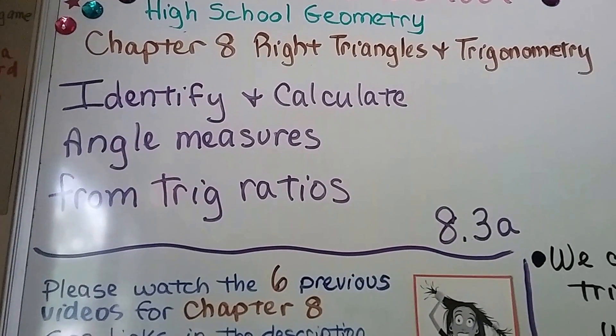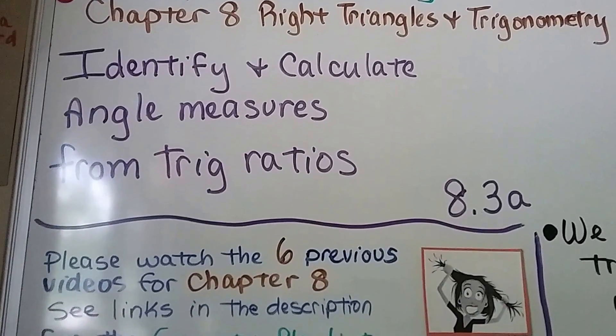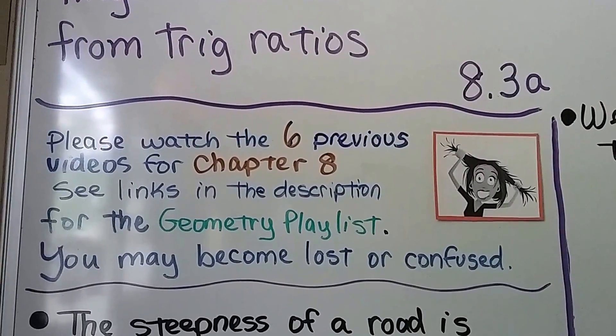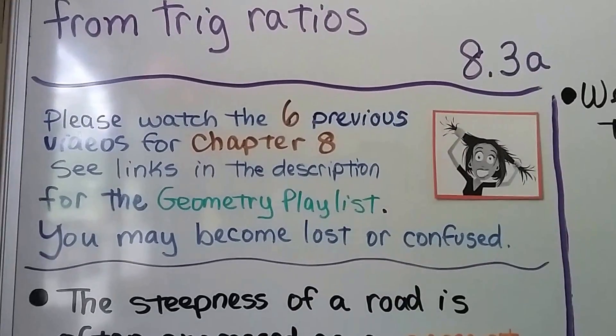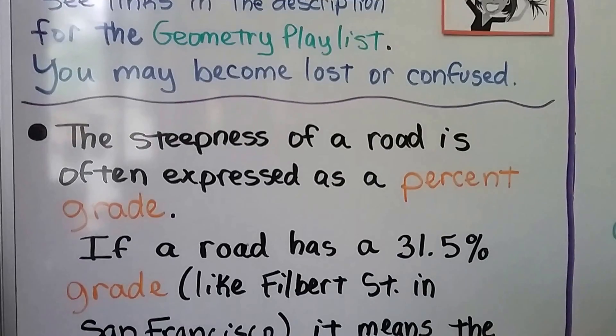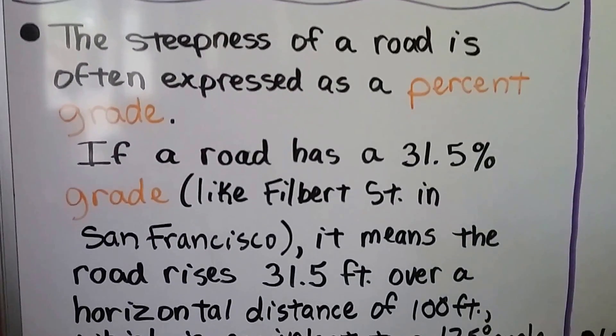Today we're identifying and calculating angle measures from trig ratios. We're at section 8.3a, so there are six previous videos for Chapter 8 linked in the description in the geometry playlist if you haven't seen them. The steepness of a road is often expressed as a percent grade.